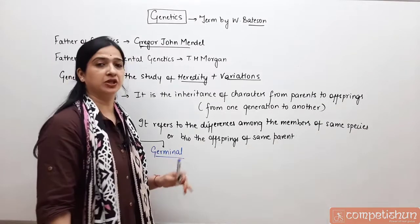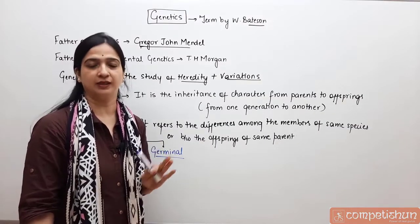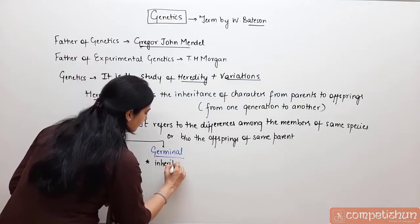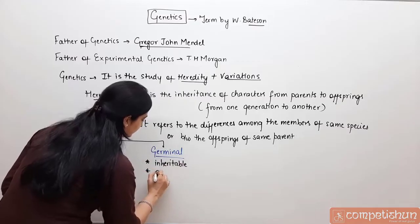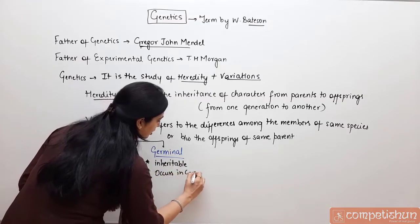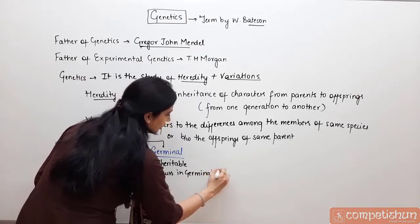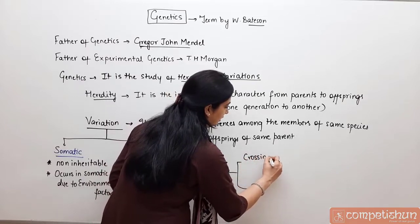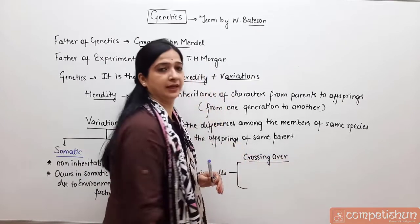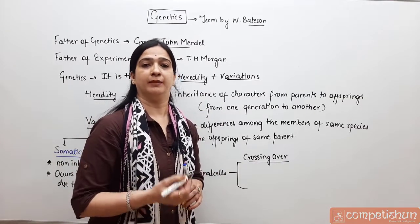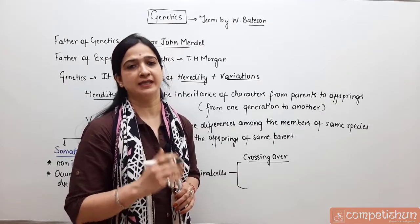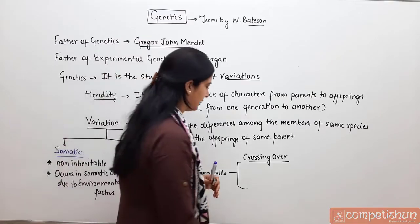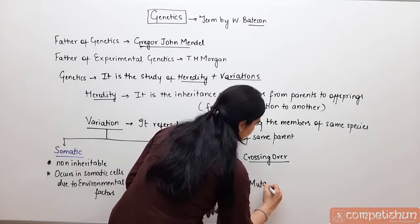Germinal variations jo aate hain, vo germinal cells ki wajah se aate hain — germinal cells means reproductive cells. So they are inheritable; they will be passed on from one generation to another. Occurs in germinal cells, and iske do causes honge: ek to hoga crossing over, and due to mutation.